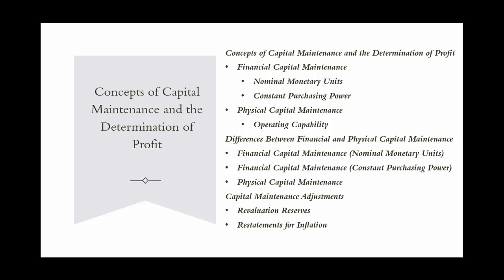The concepts of capital maintenance and the determination of profit are crucial for understanding how an entity measures and maintains its capital over time. These concepts help distinguish between the entity's return on capital and its return of capital. There are two main concepts: Financial Capital Maintenance and Physical Capital Maintenance. Under financial capital maintenance, a profit is earned only if the financial amount of the net assets at the end of the period exceeds that at the beginning of the period, after excluding any distributions to, and contributions from, owners during the period.